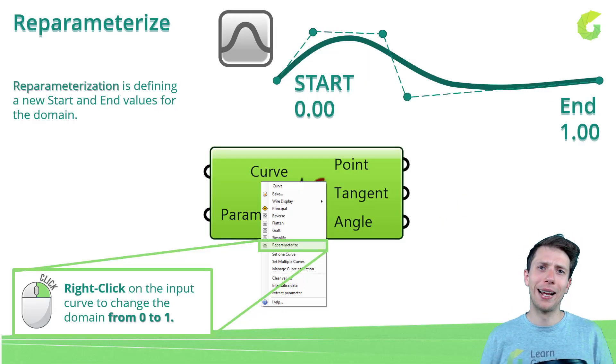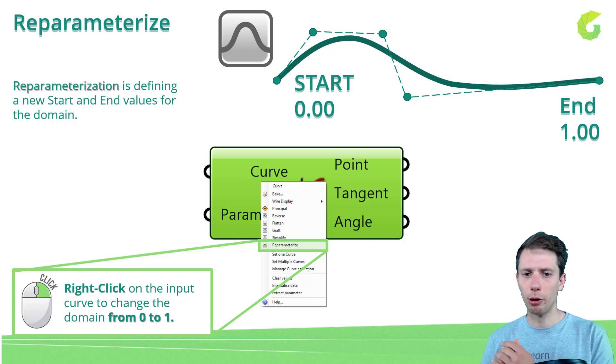And this in Grasshopper can be done really quickly. If you right click on your input data, for example in a component where the input is a curve, you can choose another option. We have reverse, we have flatten, we have graft and simplify, which we talked about before. And in addition to that, we have something called re-parameterization or re-parameterize.